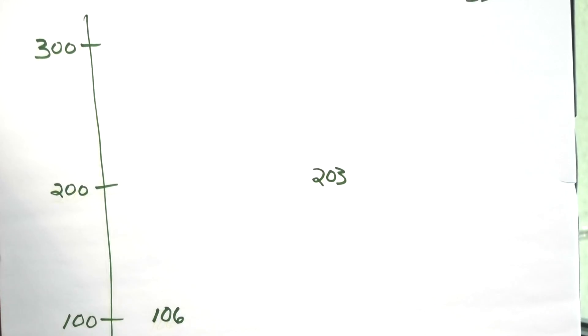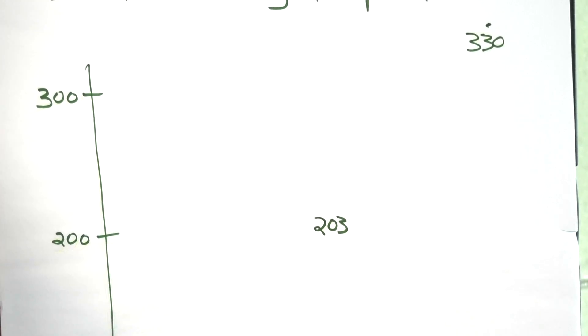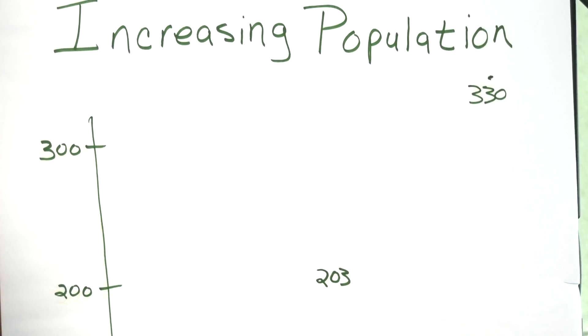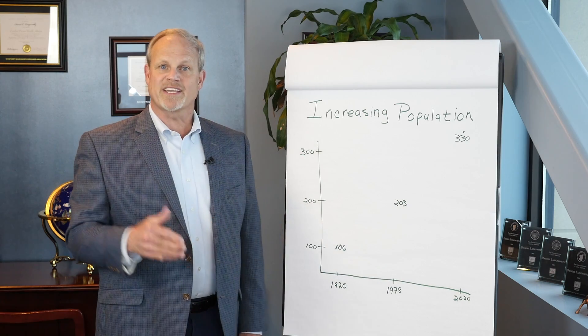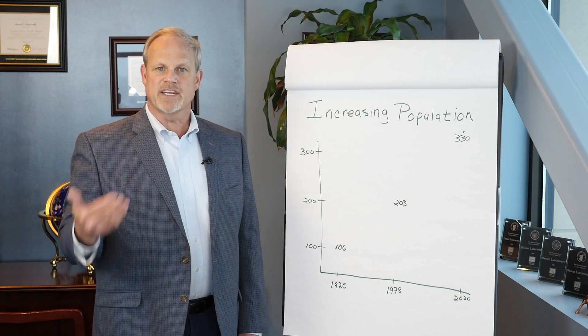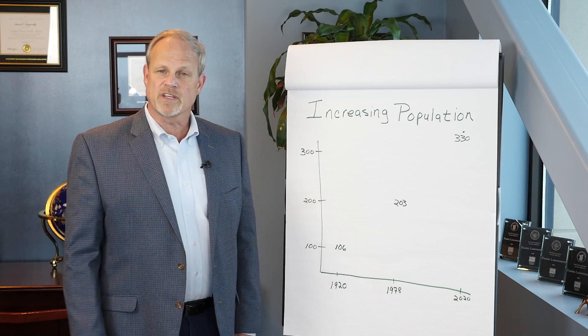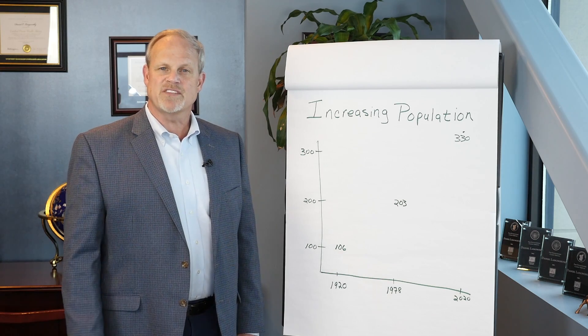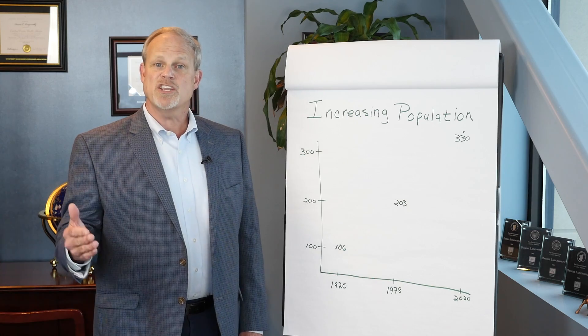What's interesting is when you look at the natural increases in the U.S. population, which is births that exceed deaths, in 2019 the natural increases in the U.S. population was 957,000.